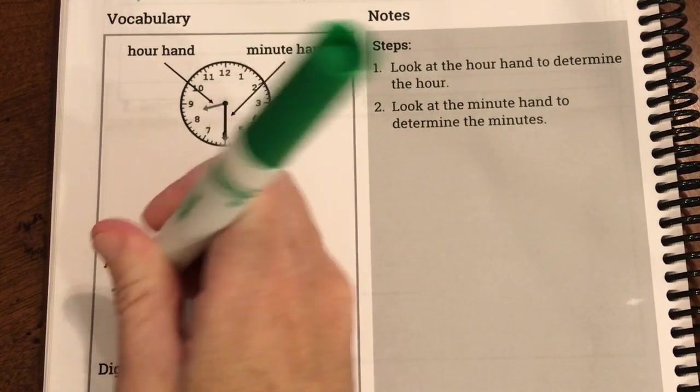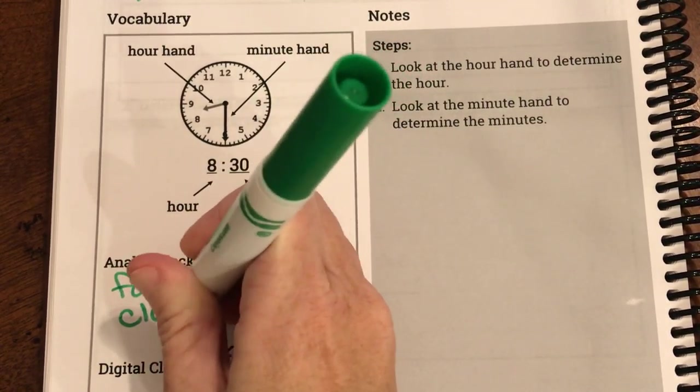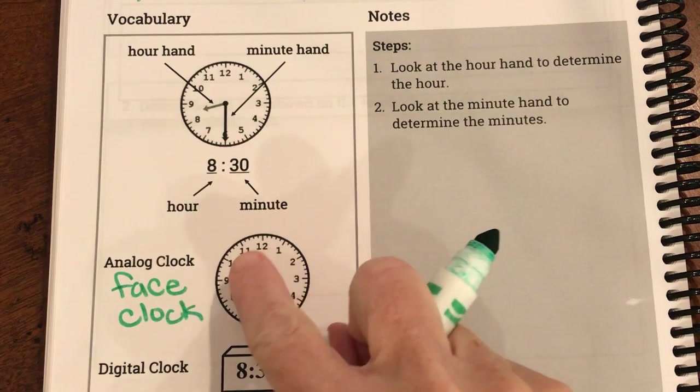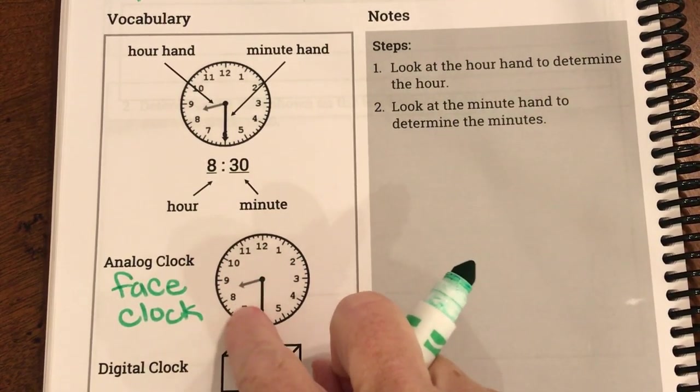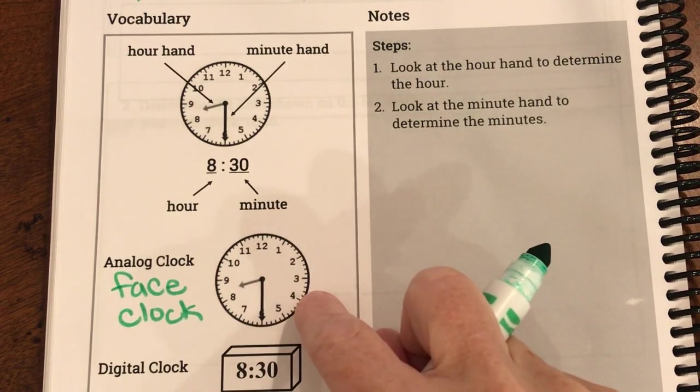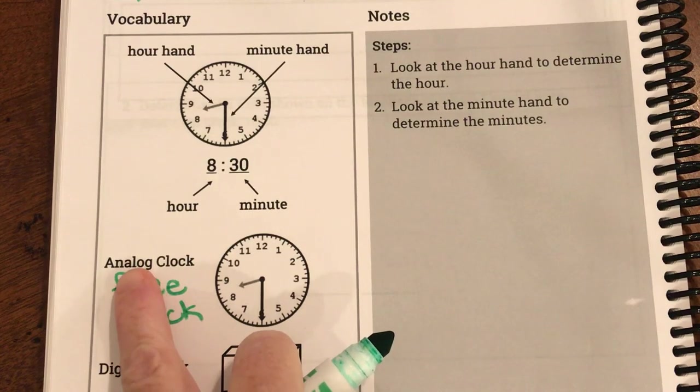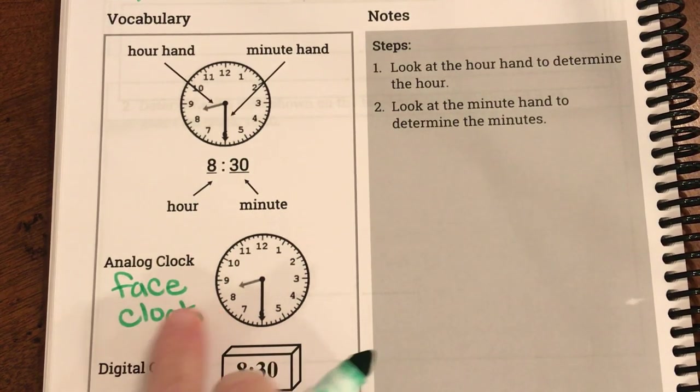So it's called an analog clock. Sometimes people also call it a face clock. But that's the type of clock this could be. So it could be a large one like we have on our classroom walls or it could be a small one on a watch. But if it has a face like this it's called either analog clock or a face clock.